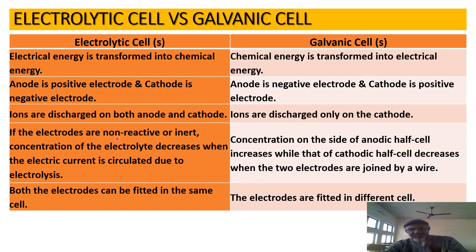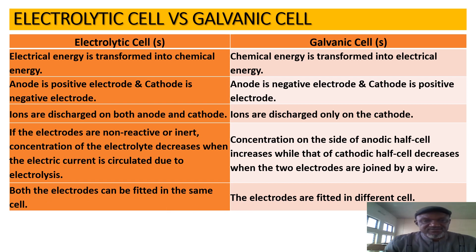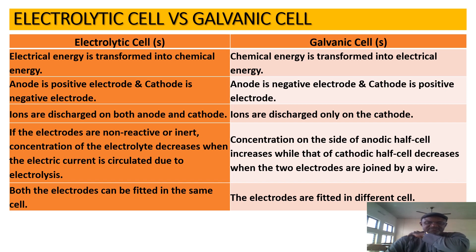If the electrodes are non-reactive or inert, the concentration of the electrolyte decreases when electric current is circulated due to electrolysis. In galvanic cells, the concentration on the anodic half-cell side increases while that of the cathodic half-cell decreases. In electrolytic cells, both electrodes can be fitted in the same cell, whereas in galvanic cells, the electrodes are fitted in different cells.